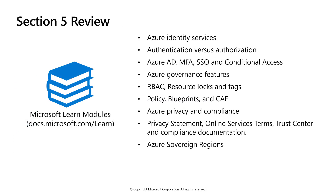That's the end of Section 5. Key takeaways: Authentication is assessing who you are, while authorization is assessing what you can do. Azure AD, multi-factor authentication, single sign-on, and conditional access provide appropriate levels of access. Role-based access control, resource locks, and tags are effective tools for governing Azure. Azure policy is a great way to enforce governance, and policy files may be aligned with Azure blueprints for compliance. The Cloud Adoption Framework provides best practices, tools, and guidance for cloud adoption. Privacy and compliance terms are spelled out in the privacy statement, online services terms, trust center, and compliance documentation. Microsoft also operates several sovereign cloud regions to meet the compliance and regulations of specific countries.